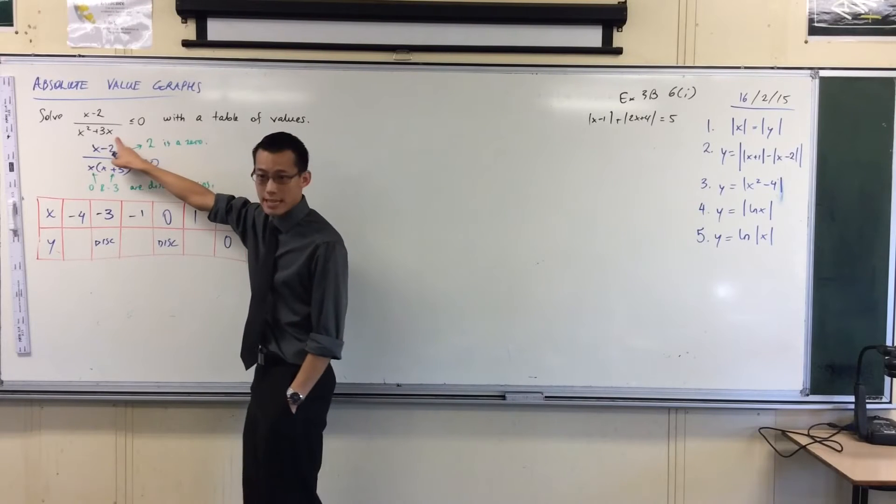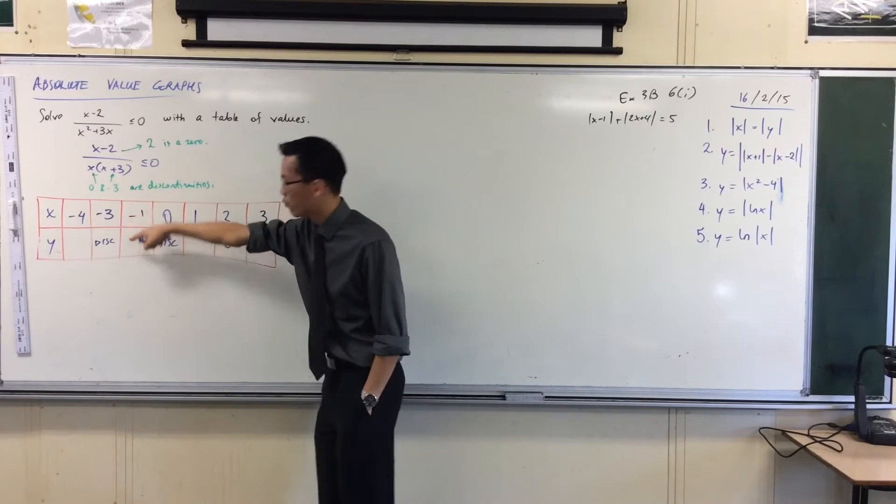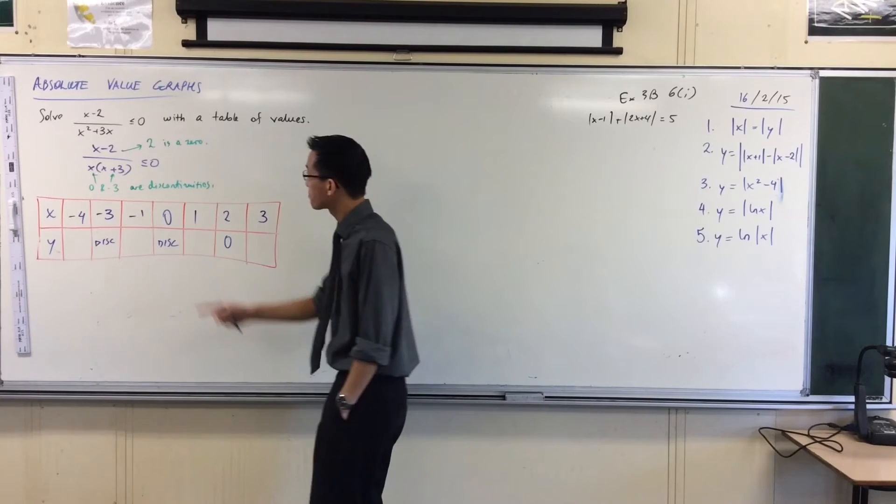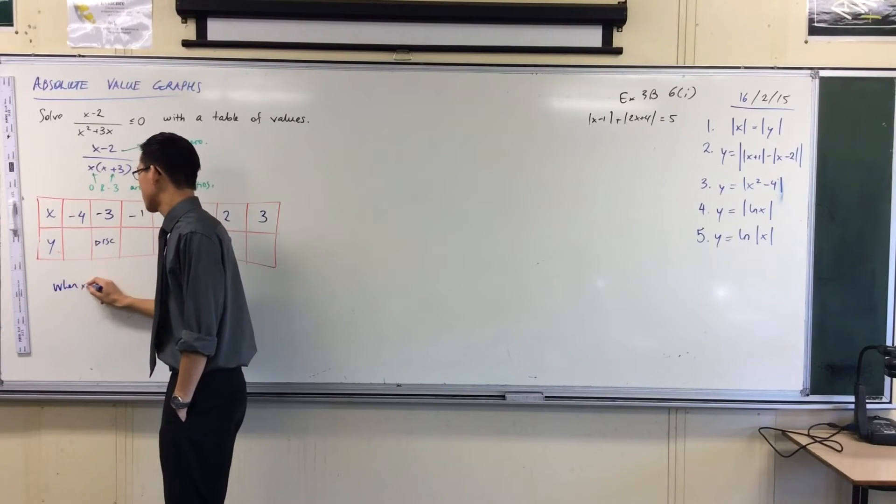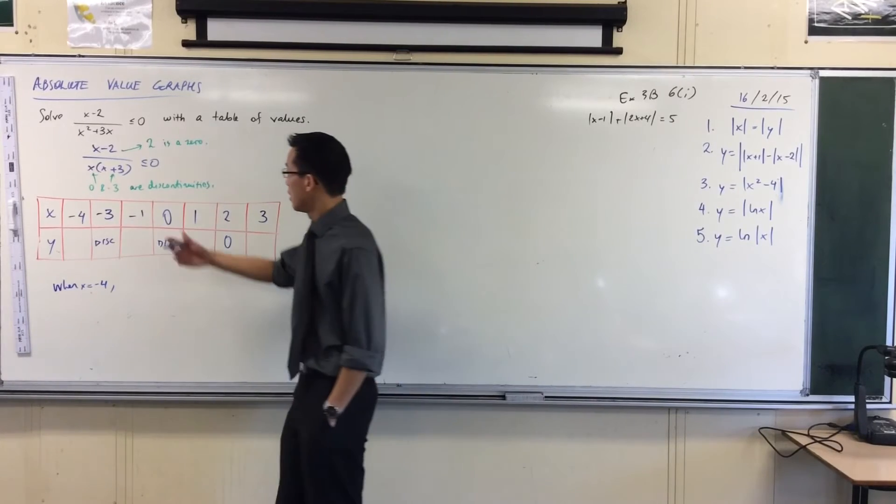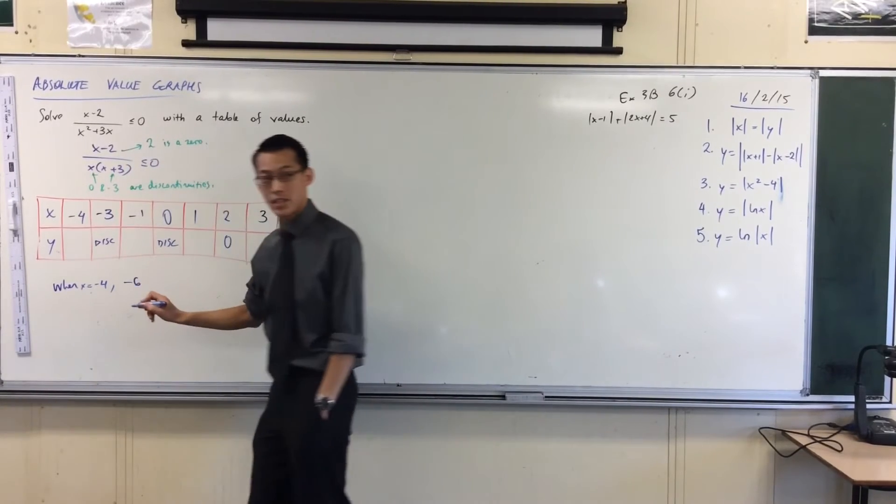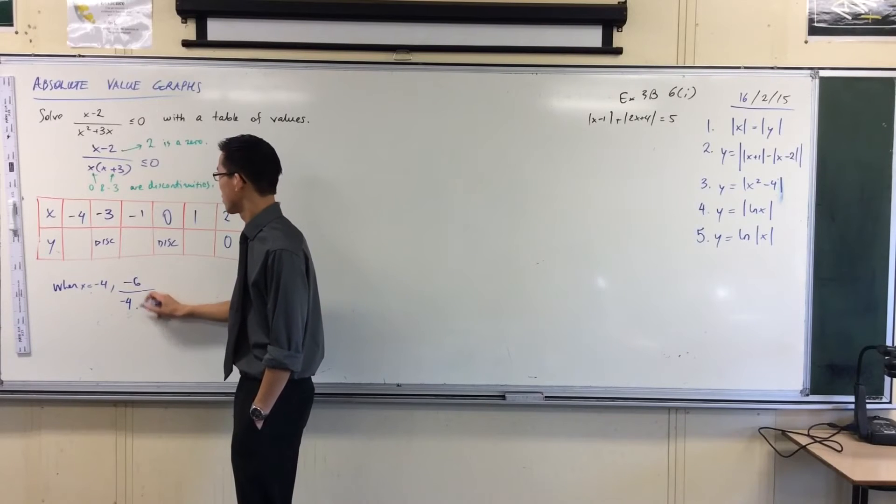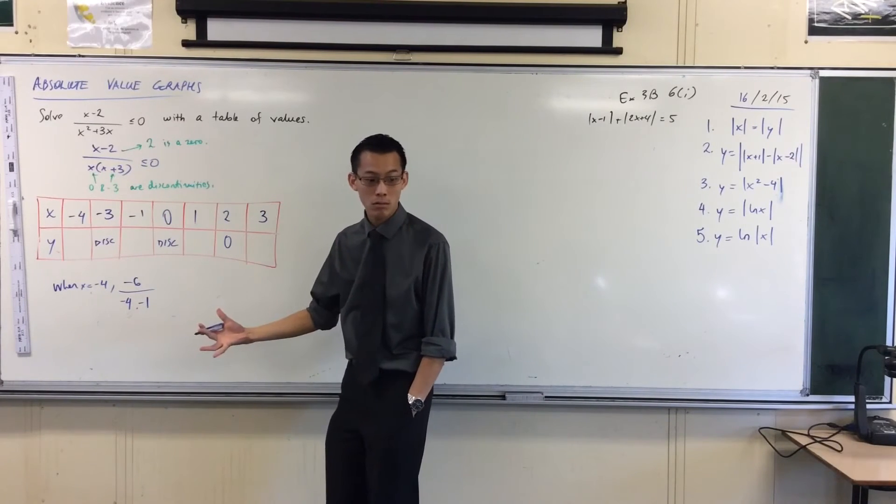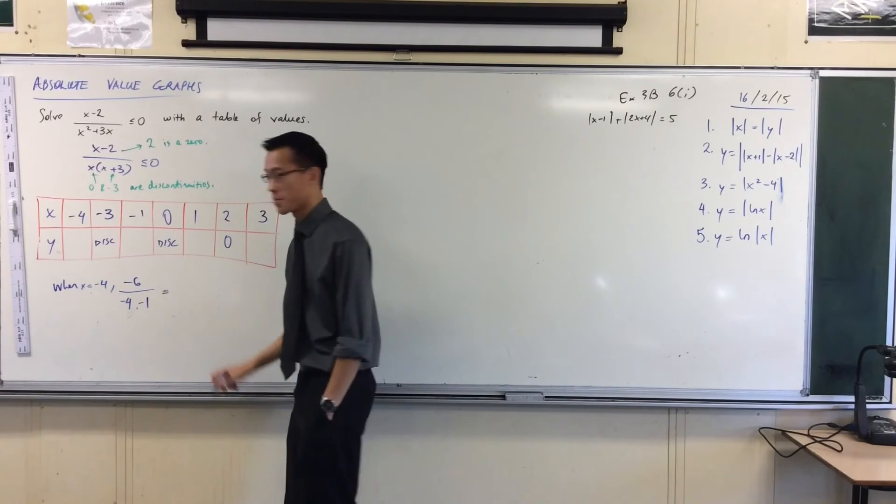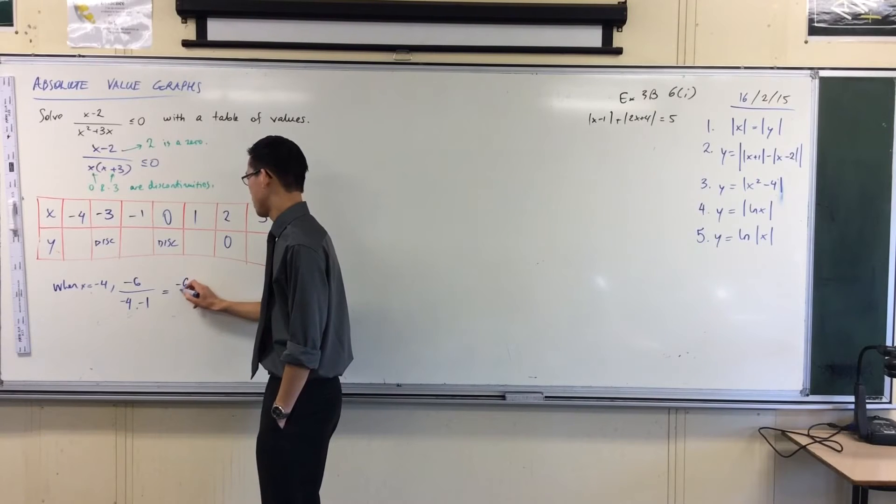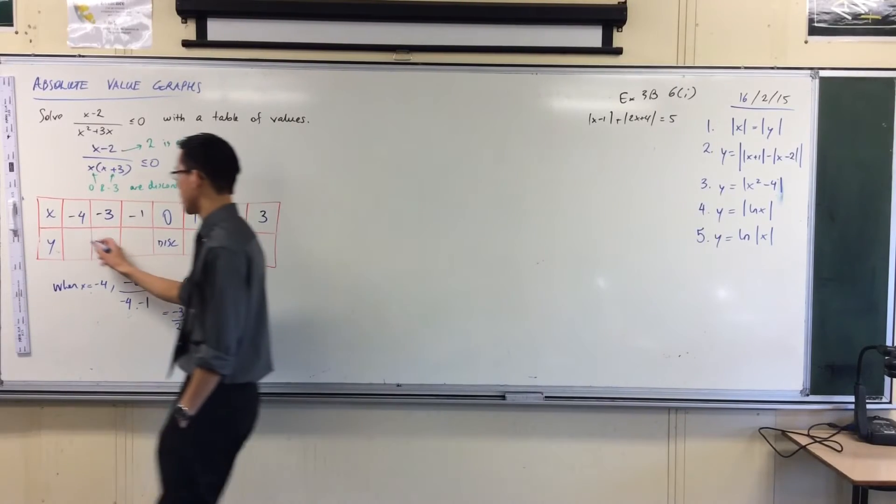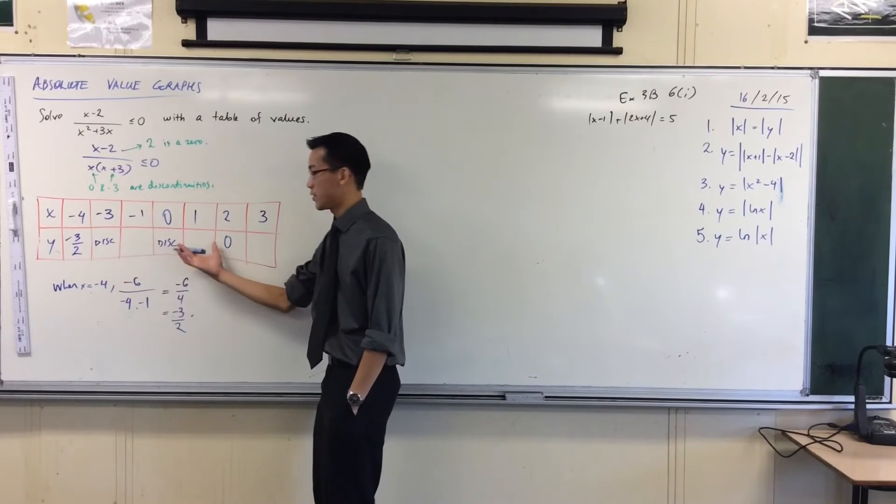Alright, so now I have these one, two, three, four values that I must test. I want to know what's this thing equal to at negative four, at negative one, and so on. Let's just quickly do one of them. You can see the process, and then I'll do the rest of them because I've already worked them out. So let's try this one. When x equals negative four. Okay, so now I'm evaluating. What's this thing equal to? Well, on the numerator, I've got negative six. On the denominator, I'm going to have negative four times minus four plus three, which is negative one. Okay, so that's just four. So what have I got here? What's my actual value? Negative six on four, which is negative three on two. Okay, so that's my value, and that's what I put into here. Ta-da!